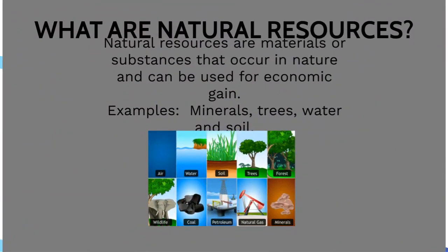What are natural resources? Natural resources are materials or substances that occur in nature. As you can see, examples over here — you have trees, you have water, you have soil. Anything that occurs in nature is called natural resources.